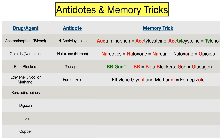Next we have benzodiazepines, which are a class of medications used for anxiety, seizures, alcohol withdrawal, among other indications. The antidote here is flumazenil. This is another easy trick if you just use the letters in the name — both benzodiazepine and flumazenil contain the letters A-Z-E. It can be easy to mix up fomepizole and flumazenil when first learning them since they both start with F and have a few similar letters, so hopefully these tricks will help you remember them.